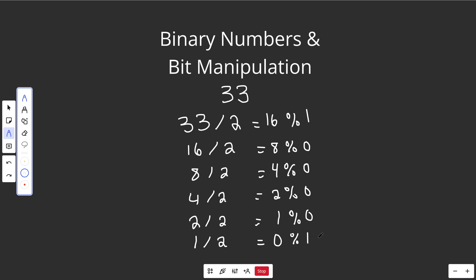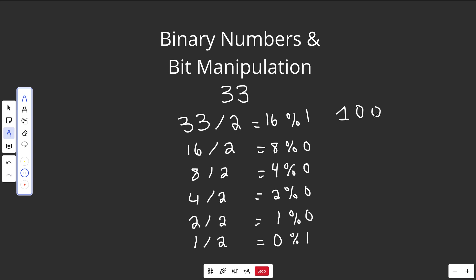Your binary number is just going to be these remainders in reverse order. So you take that last 1 first, then 0, 0, 0, 0, and finally 1. That gives you 100001.